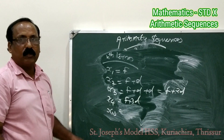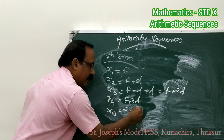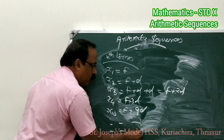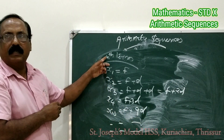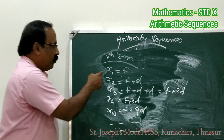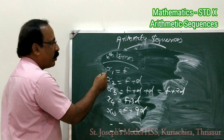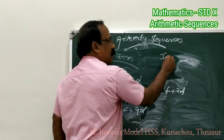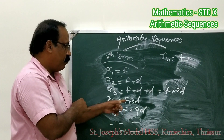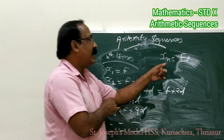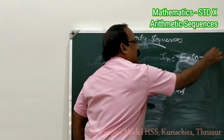What will be x10? It equals f plus 9d — that is, 10 minus 1 gives 9d. Similarly, we can find all terms using this pattern: first term f, second term f plus d, third term f plus 2d, fourth term f plus 3d, tenth term f plus 9d. So xn equals f plus n minus 1 into d. This is the first equation — the nth term of an arithmetic sequence equals f plus (n minus 1) times d.